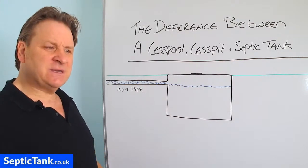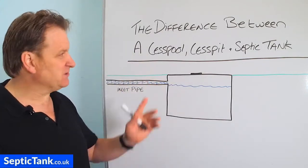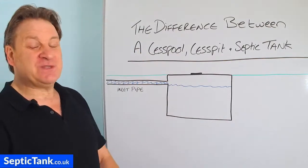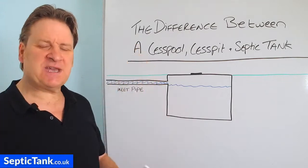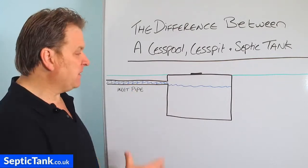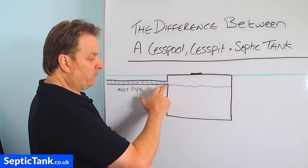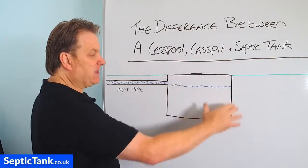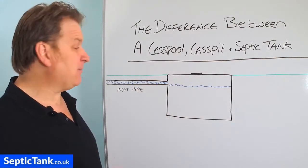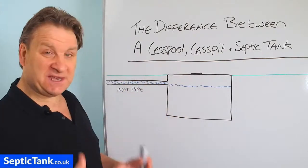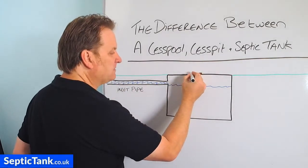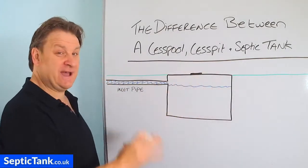What that means is liquid can come in but no liquid can escape or leave the tank. Cesspools are good in the sense that — let's say you want to protect the environment from sewage pollution — once it's full, once the tank has reached the level of the inlet pipe, it can't escape. It's safe, it's contained within the structure. And the only way you can get the liquid out is to get the tank sucked out. You have to get a tanker in — he'll come, take the lid off, put his pipe into the tank and suck all the liquid out.